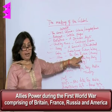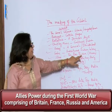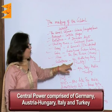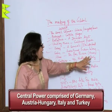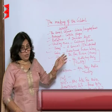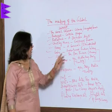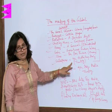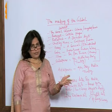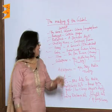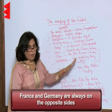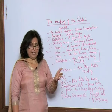The Allied Powers comprised Britain, France, and Russia, and later on, near the end of the World War, America joined them. The Central Powers comprised Germany and Italy, and later on Turkey joined them. Remember: France and Germany have always taken opposite sides during both the World Wars.